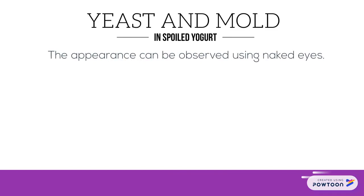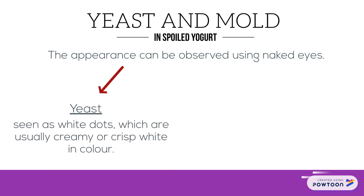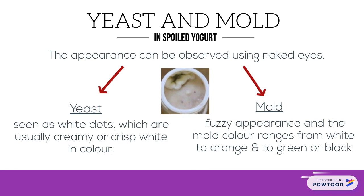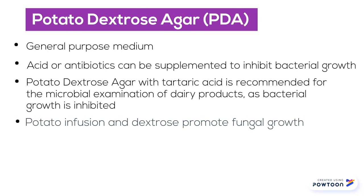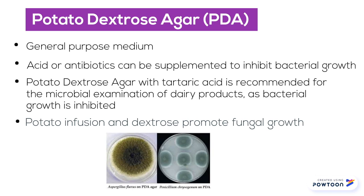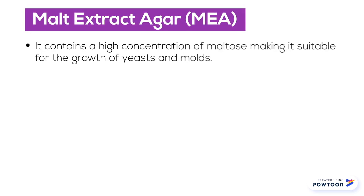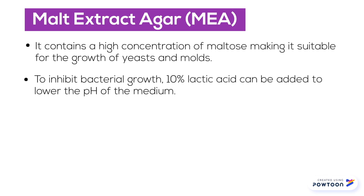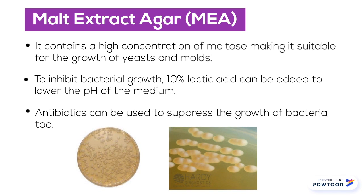To detect yeast and mold in spoilt yogurt, appearance can be observed with the naked eye. The presence of yeast is seen as white dots, usually creamy or cream-white in color. Mold gives a fuzzy appearance ranging from white to orange and to green or black. Potato dextrose agar (PDA) is a general purpose medium for yeast and mold that can be supplemented with acid or antibiotic to inhibit bacterial growth. PDA with tartaric acid is recommended for microbial examination of food and dairy products. Malt extract agar is also suitable for yeast and mold detection as it contains a high concentration of maltose. Ten percent lactic acid or antibiotics can be added to lower the pH and suppress bacterial growth.